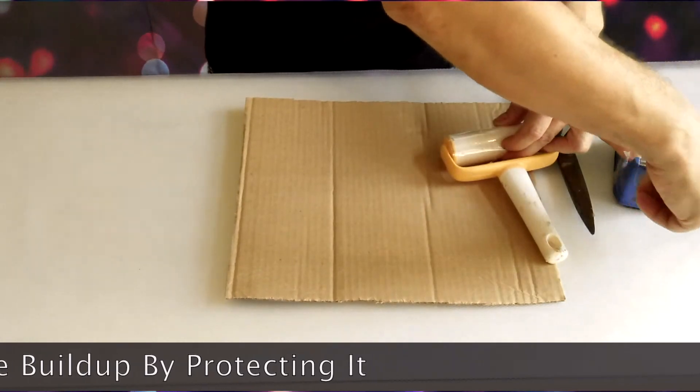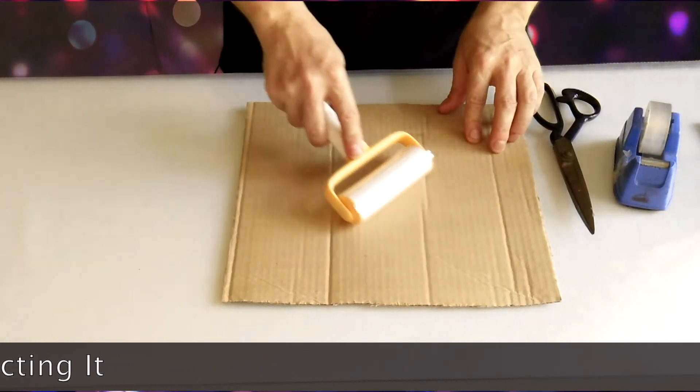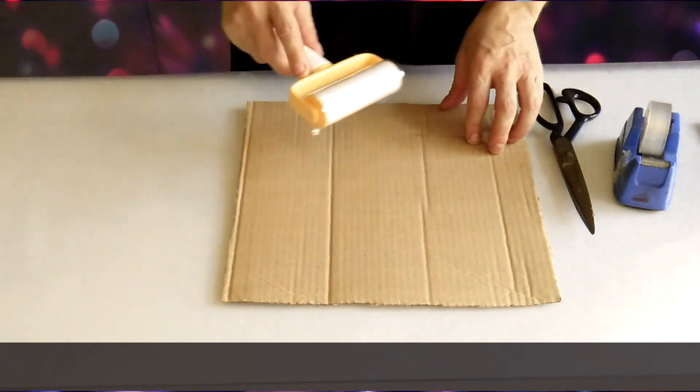And then get another piece of tape. This way when the roller does get a lot of glue on it, you can just take it off and put a new piece of plastic on it. Makes it very easy to use.